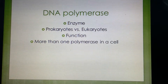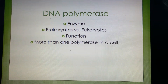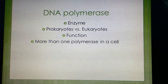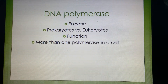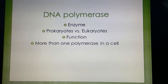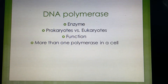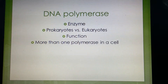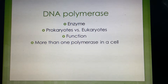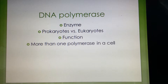In prokaryotes, it'll take about 20 minutes to replicate the material, versus in eukaryotes it may take up to 24 hours. However, more than one polymerase exists in eukaryotic organisms — sometimes there can be up to 15 different polymerases. This is relevant because it allows replication to move from one generation to the next, just to keep the cell going.